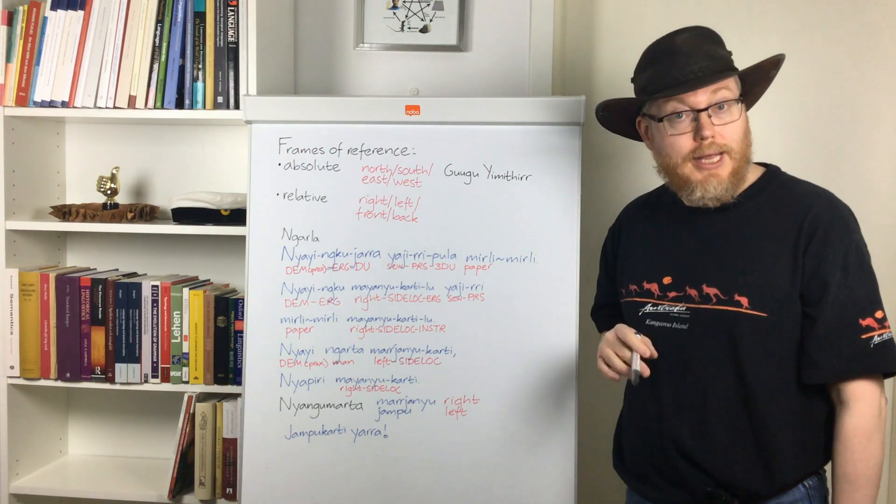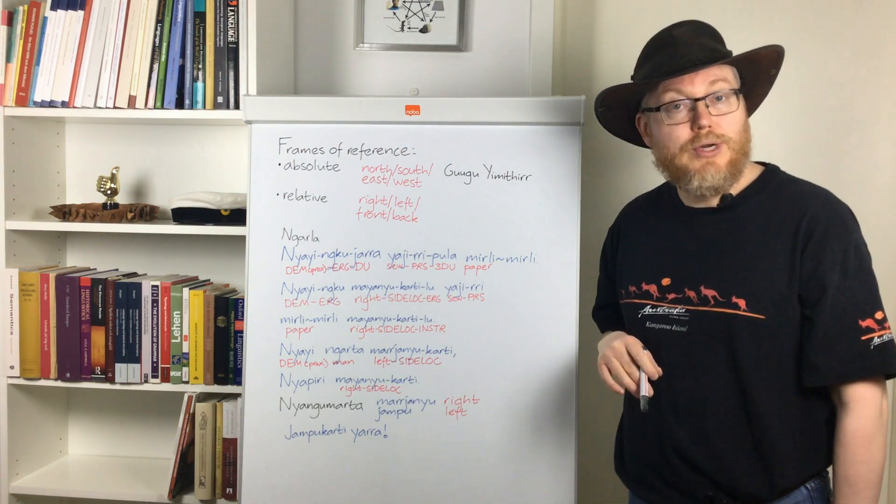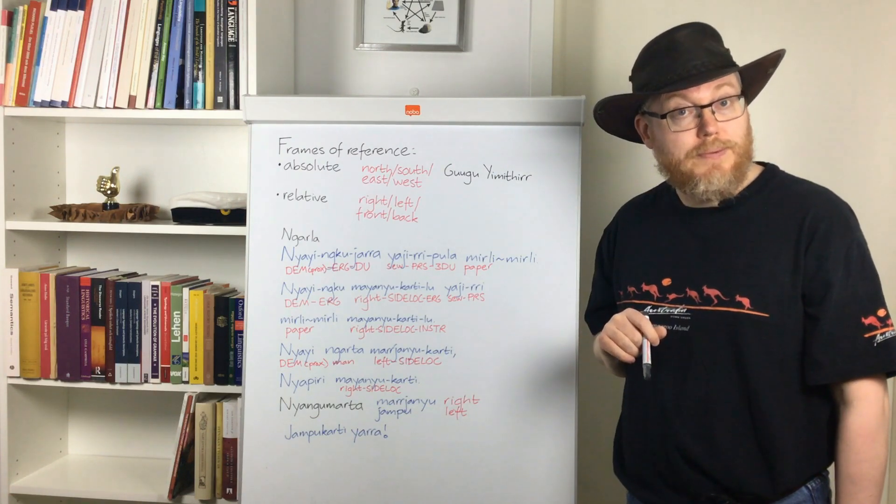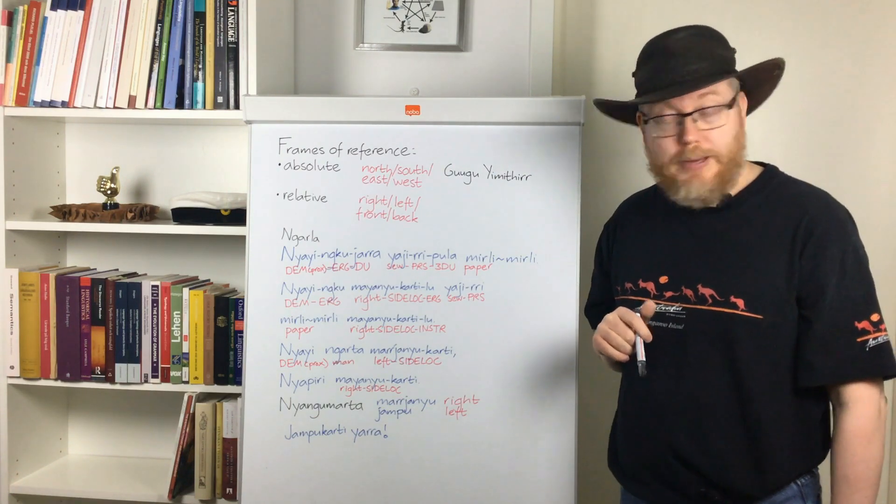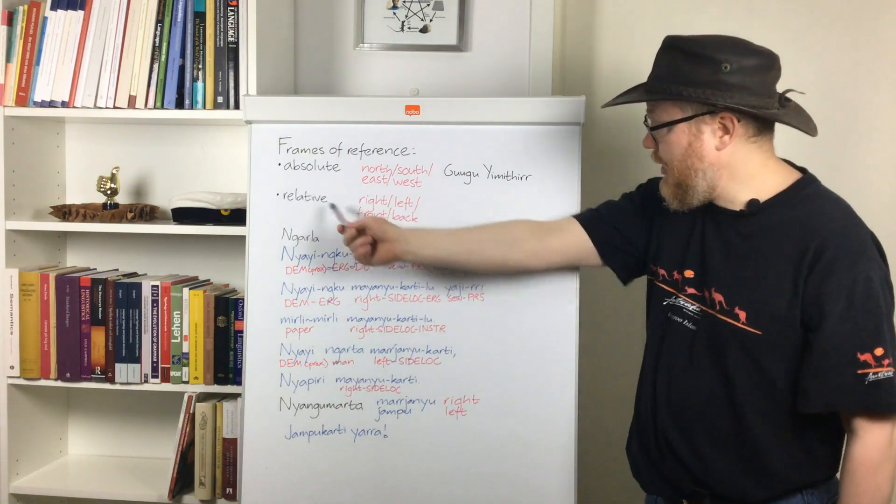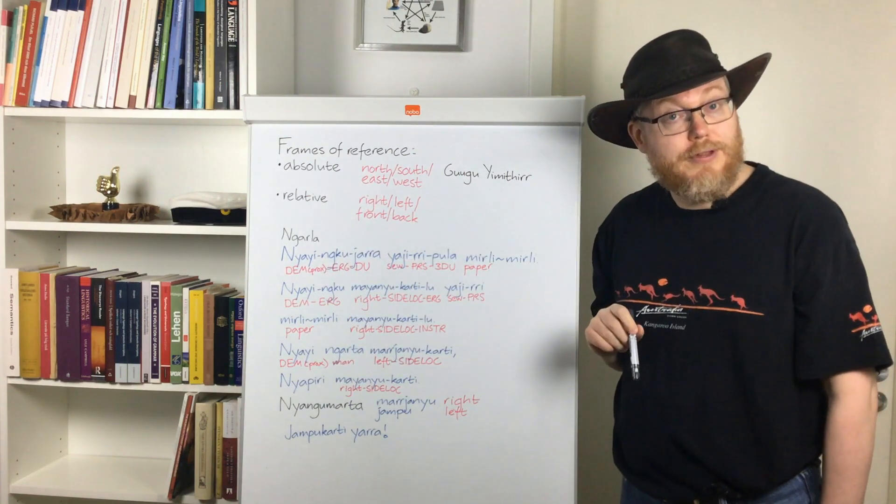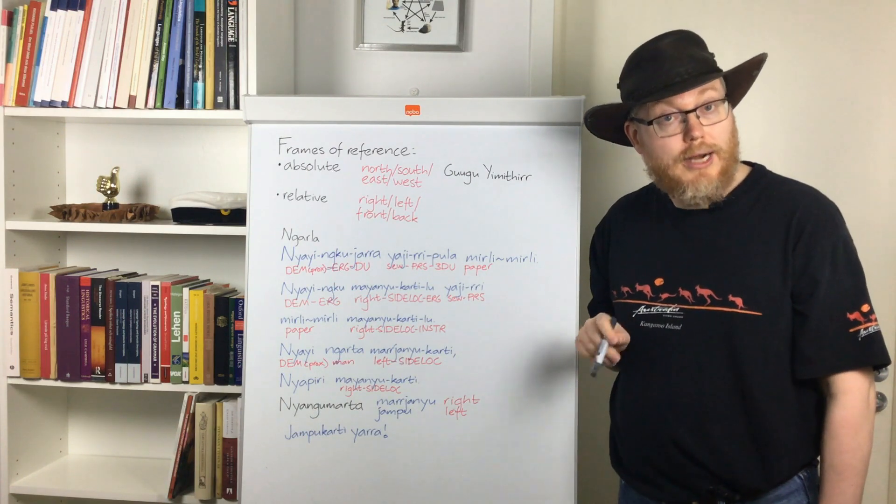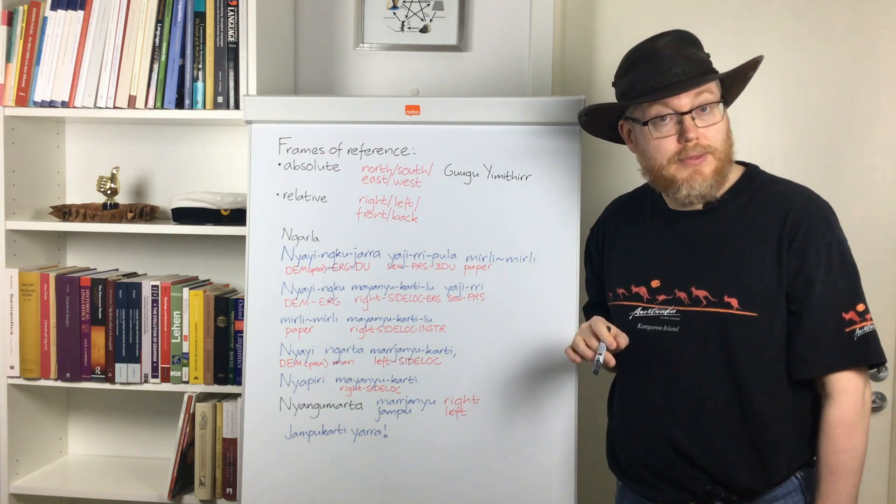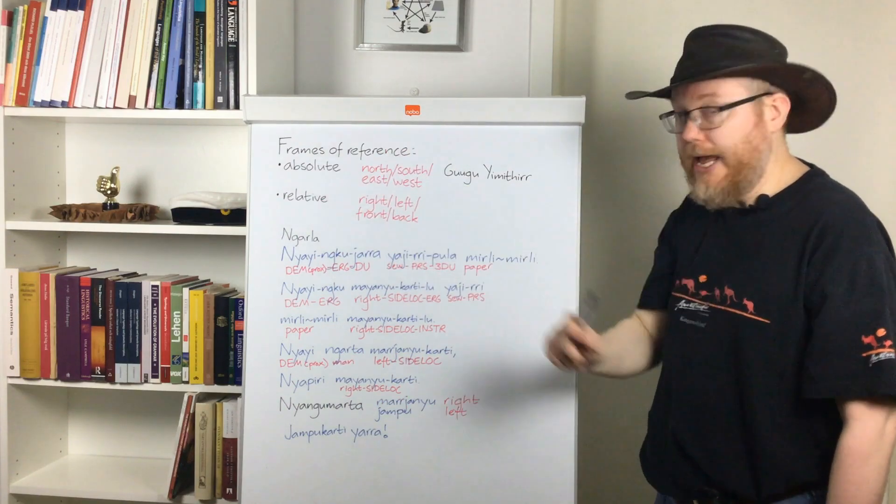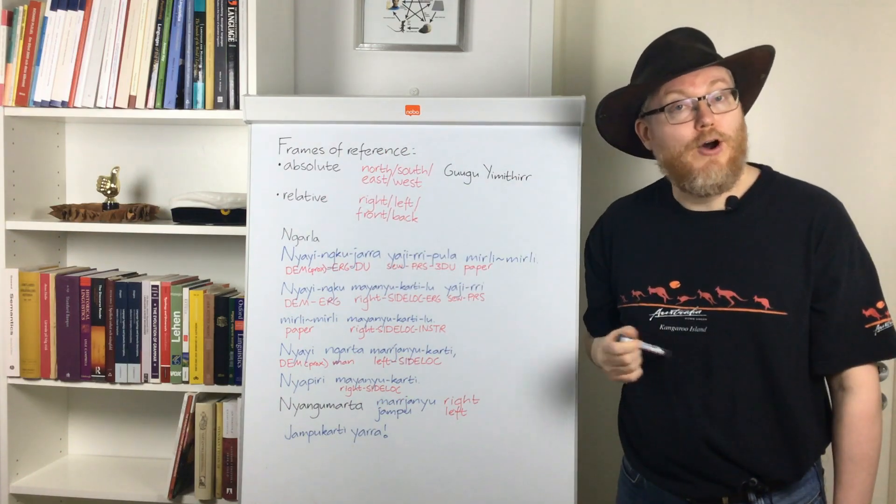This is the case, for example, in Tamil. Perhaps this is interesting in this context. Tamil, an Indian language, in which urban speakers prefer the relative frame of reference, so right and left and so on, while rural speakers, so speakers out in the countryside, prefer an absolute frame of reference.